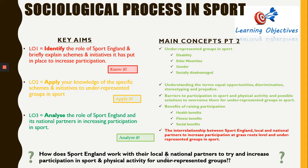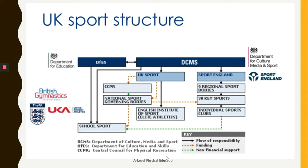We're continuing to look at the interrelationship between Sport England and its national and local level partners. Today we'll start looking at a diagram of what the structure of UK sport looks like. We've discovered in previous lessons that we've got a body in government called the Department for Culture, Media and Sport, which is in charge of running sport here in the UK. We've also talked about the fact that grassroots sport is based on a pyramid of participation, with the foundation being school sport.